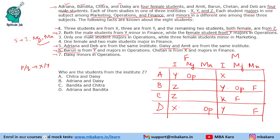We are left with just 2 more points. Only 1 male student majors in operations, so that person majors in operations while these 2 cannot major in operations. Now, if person D does not major in operations and cannot major in finance either, then D will major in marketing. While 3 female students minor in marketing — 1 female student is already minoring in operations, so the rest will be minoring in marketing.